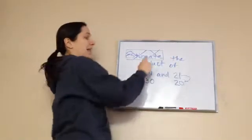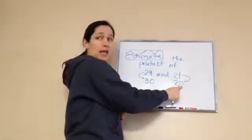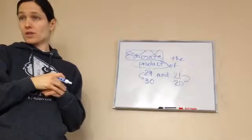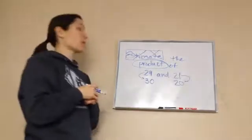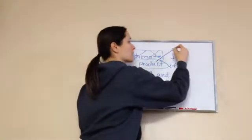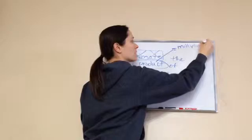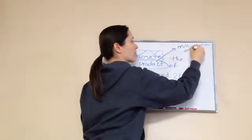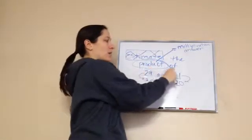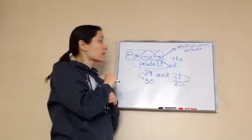Okay. Now, let's answer the product of 30 and 20. What does product mean? Like, the equal? The answer to what kind of problem? Multiplication. Multiplication. Very good. Product means multiplication answer.